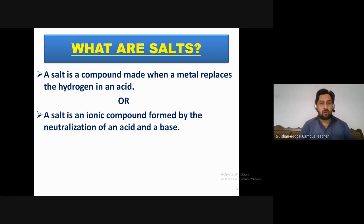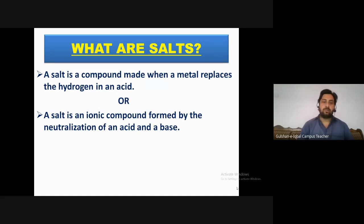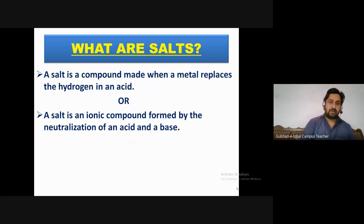A salt is a compound made when a metal replaces the hydrogen in an acid. Or simply, a salt is an ionic compound formed by the neutralization of an acid and a base. When an acid and base neutralize, both lose their properties — the acid loses its acidic property and the base loses its basic property. The resulting compound that forms is an ionic compound, and that ionic compound is known as salt.